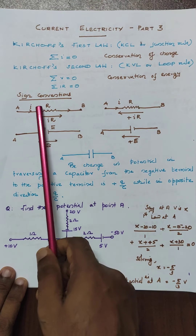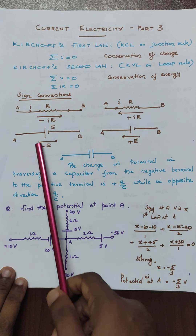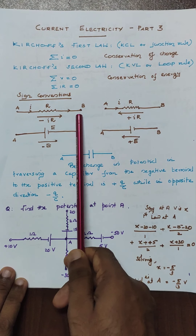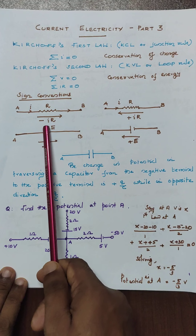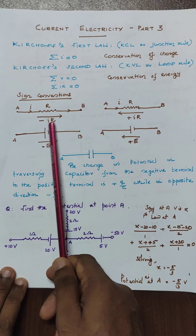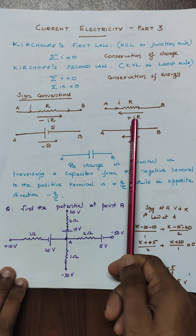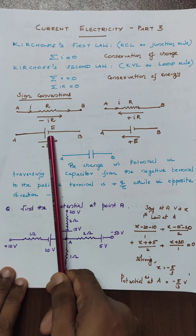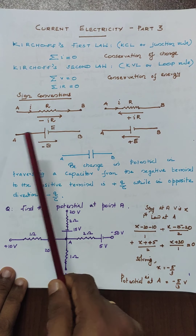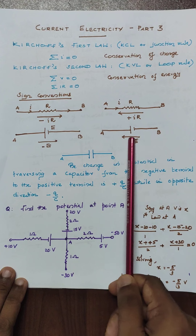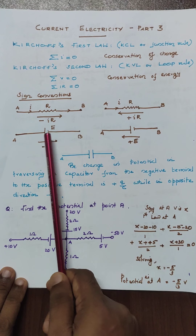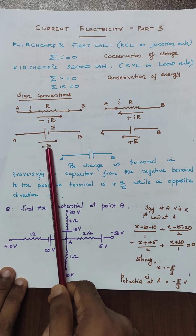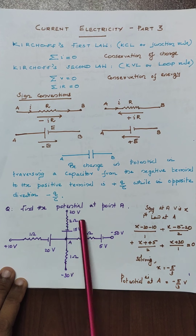While solving problems, these five sign conventions should be in our mind. While going from one end of the circuit to another, if it is in the direction of the current, we take it as minus I into R. But opposite to the direction of current, you take it as plus I into R. While moving from negative potential to positive potential, you take it as plus. But positive to negative, you take it as minus — that defines the magnitude of potential.